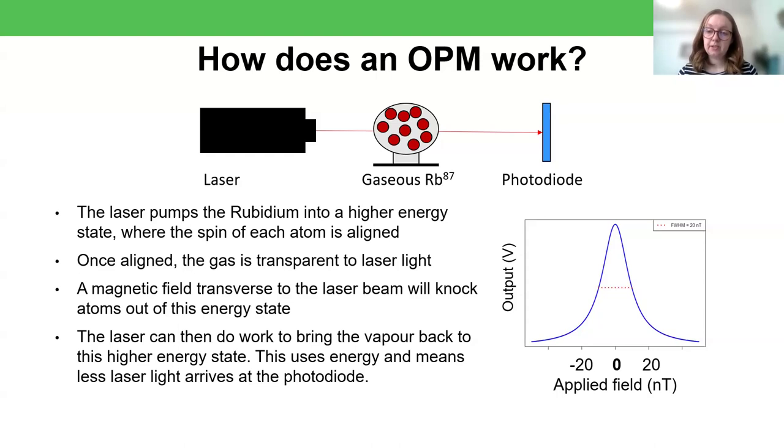And what we really want for this to be a very sensitive sensor is for this peak to be as tight as possible. Because in that case, even for a very small magnetic field change, bear in mind that the x-axis here is looking at nanotesla, but the fields that we're expecting from the brain are at most a thousand times smaller than that, if not hundreds of thousands. If we can make this peak really tight, even for a very small change in magnetic field, we're still seeing an observable change in voltage.